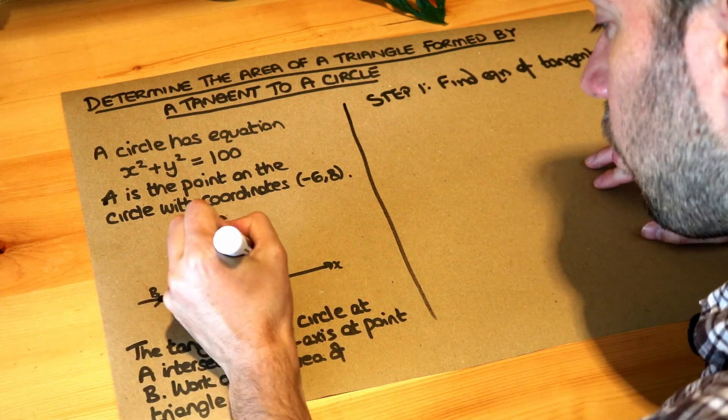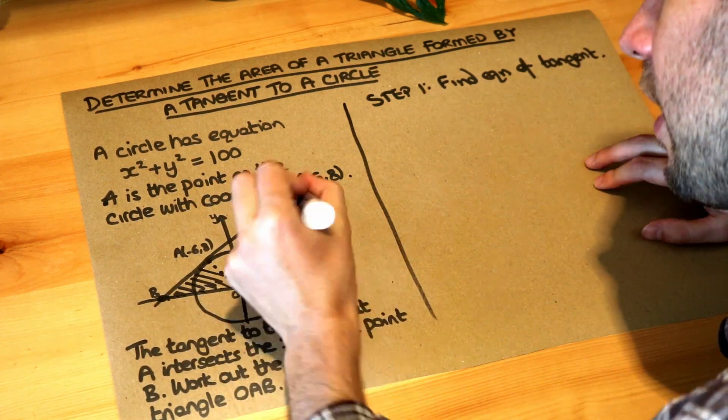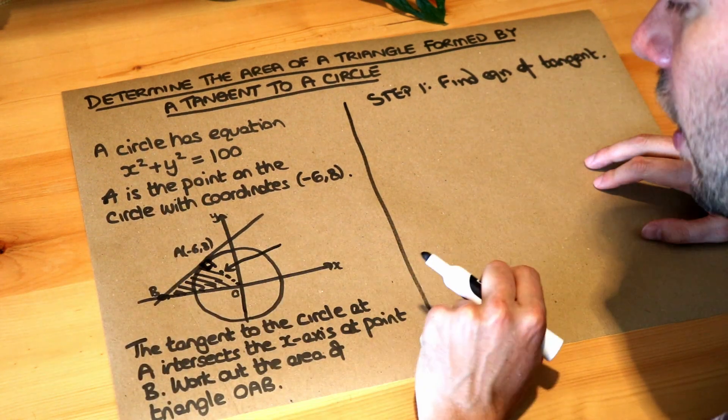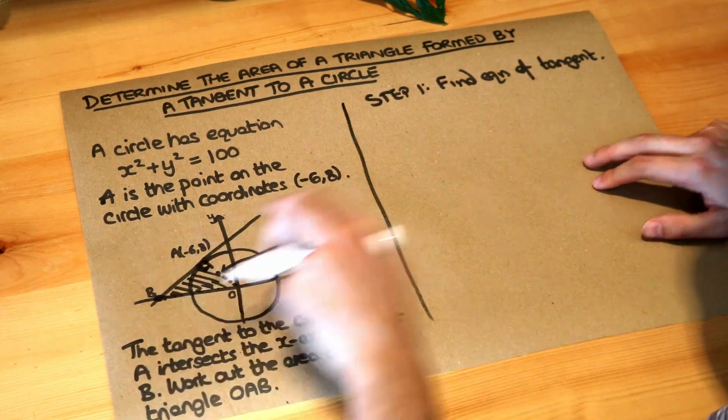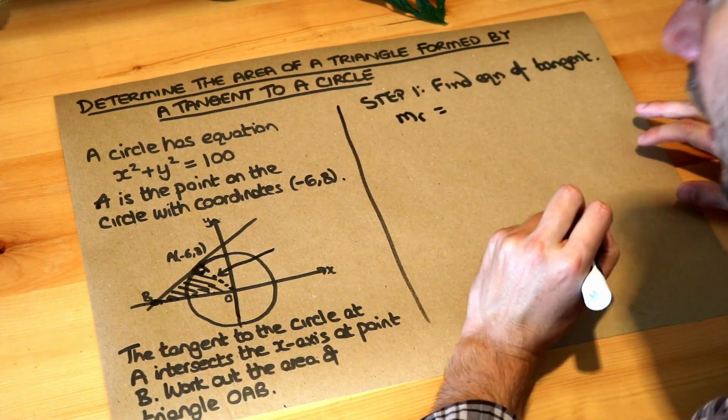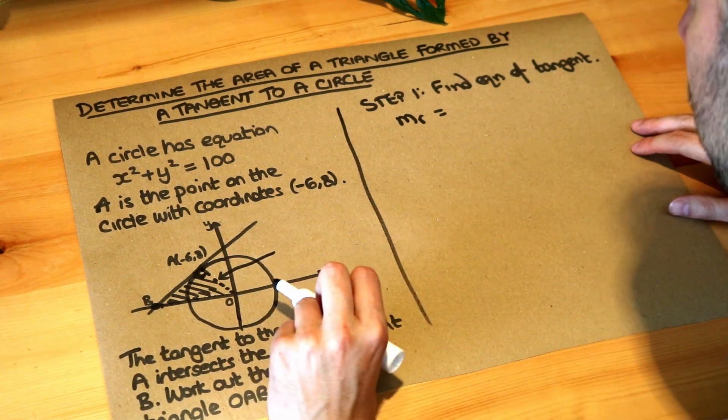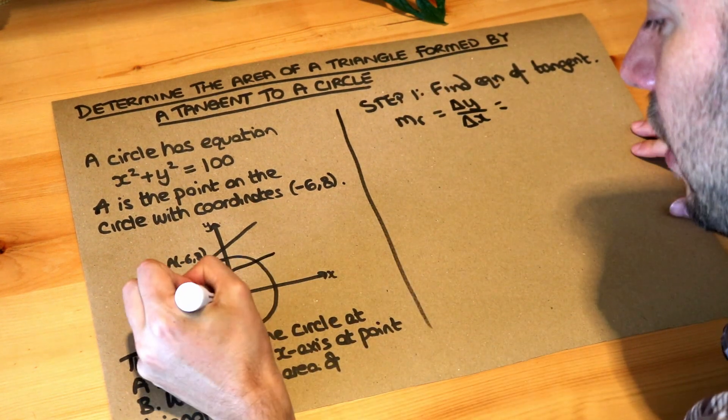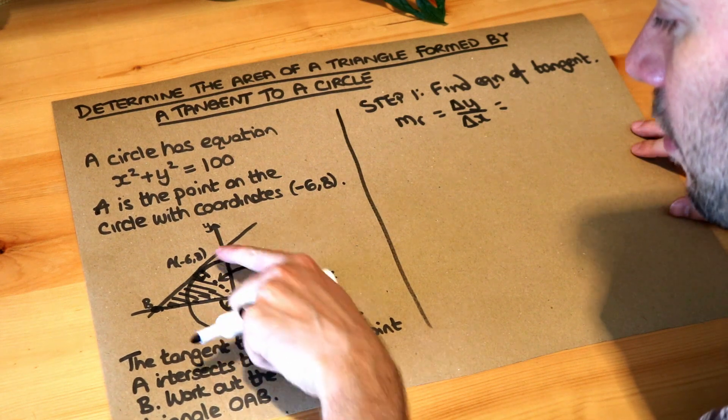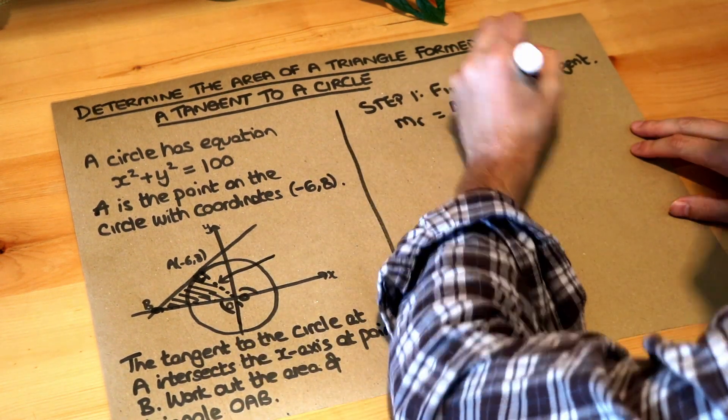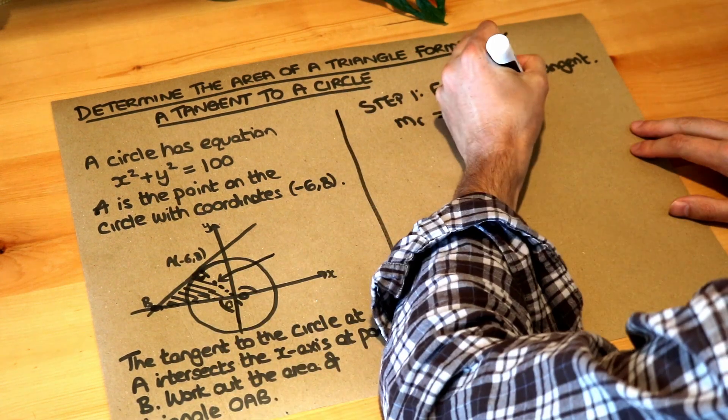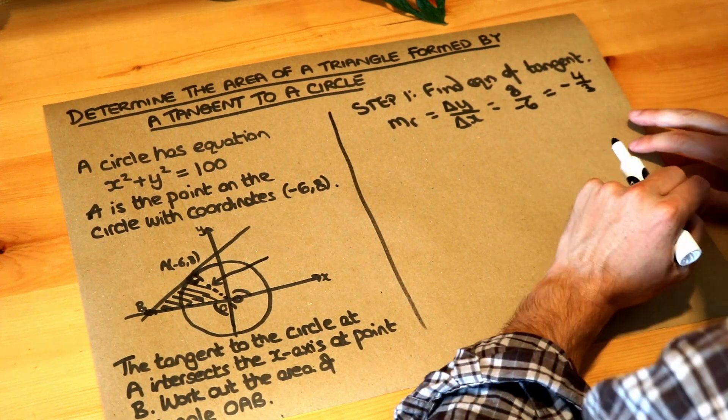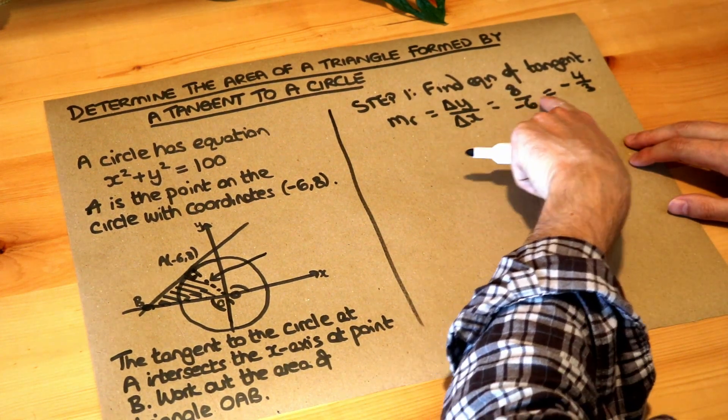We first find the gradient of the radius, so the gradient of this radius here. Remember that was a right angle here to the tangent to the circle. So the gradient of the radius is just the change in the y-value over the change in the x-value. Now if this is the point 0, 0, the change in the y-value from 0 to 8 is just 8, and the change in the x-value from 0 to minus 6 is just minus 6. If I simplify that, that's minus four-thirds. I'm just going to put the minus on the front of the fraction instead of inside.